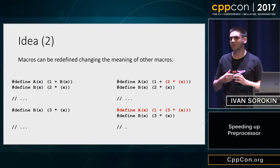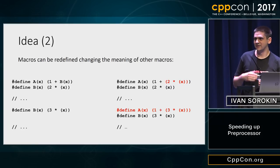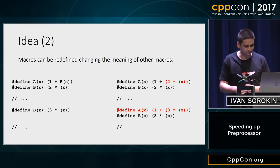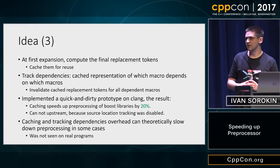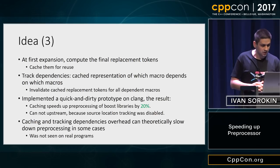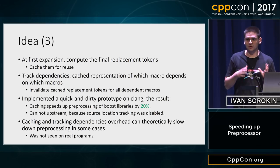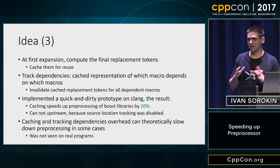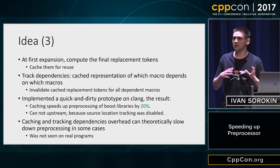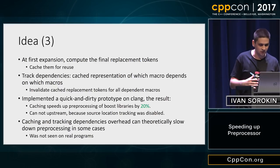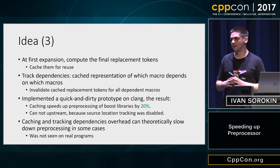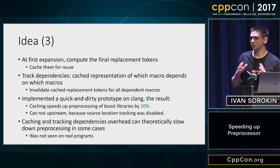Surely, B can be redefined, and that's why the final replacement of A needs to be updated. Using these ideas, we made a prototype based on Clang. At the first expansion of each macro, we compute the final replacement for it. And we track the dependencies — which macro depends on which — so we can invalidate them correctly. This gave us a nice 20% speedup on Boost libraries.